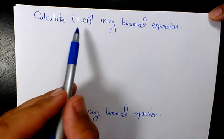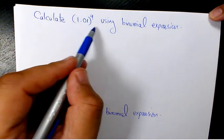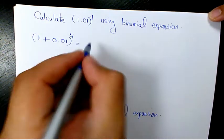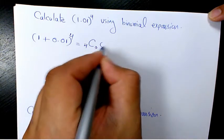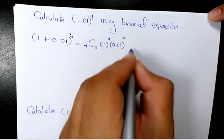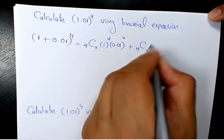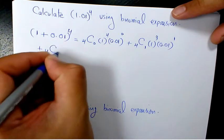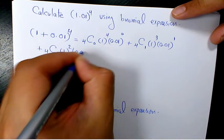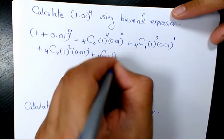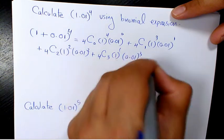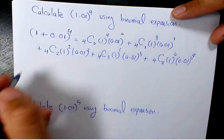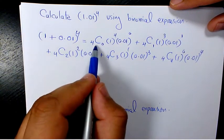The first one is 1.01 to the power of 4. I need to expand it — I'm going to write 1.01 as (1 + 0.01) to the power of 4. So when you expand it, it's going to be 4C0 · 1^4 · 0.01^0 plus 4C1 · 1^3 · 0.01^1 plus 4C2 · 1^2 · 0.01^2 plus 4C3 · 1^1 · 0.01^3 and finally 4C4 · 1^0 · 0.01^4.